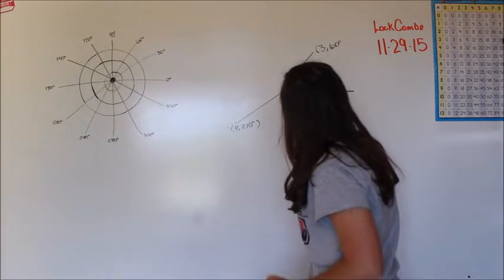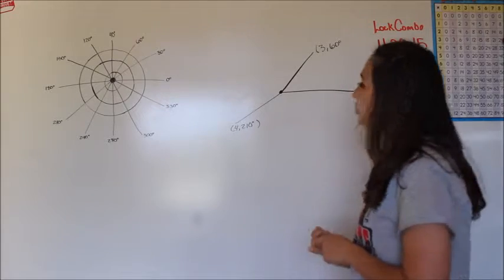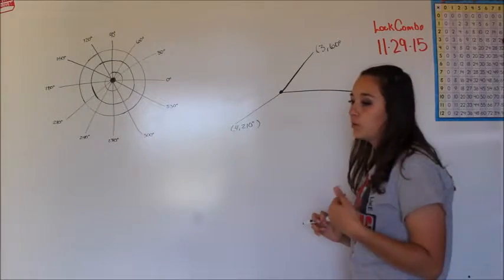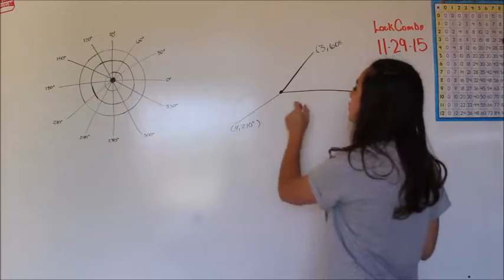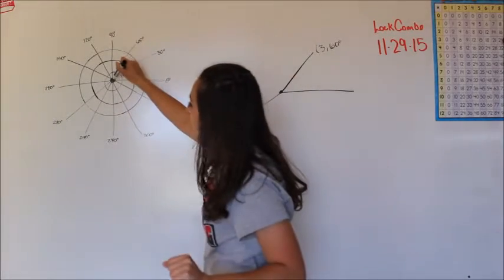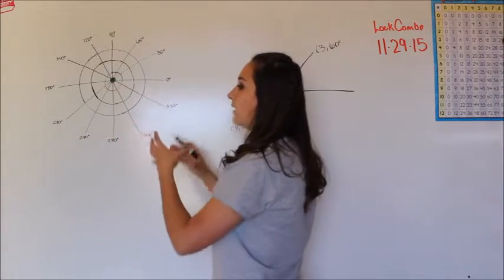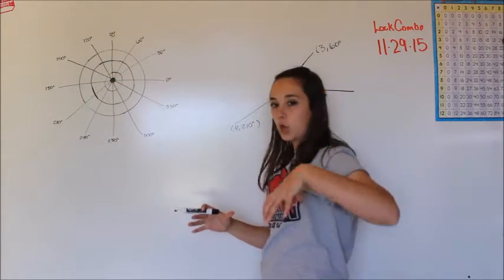So this right here is going to be called the pole, P-O-L-E, just like the North Pole. And that's how I personally remember it because it's like the center point that everything else branches off of. And if you can see from here, this would be like this image here would be more like if you were looking from the top of a globe down.